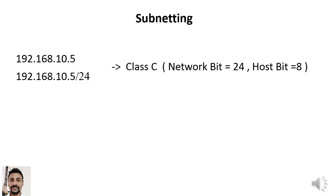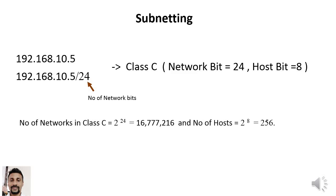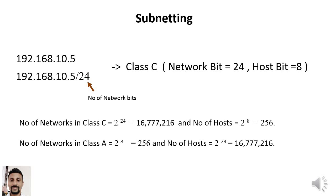As discussed in the previous video, for Class C we can find the number of networks using 2 to the power of 24, where 24 is the network bits. The number of host addresses for each network can be found using 2 to the power of 8, where 8 is the host bits. The number of networks and hosts for each class are summarized in the table.